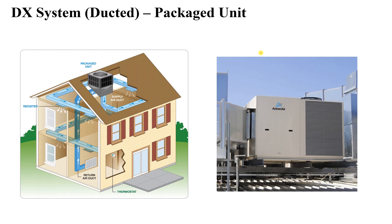There is also a package unit, which contains all components together in one block. It is usually placed on the rooftop and supplies cold air through the duct system. A return air duct absorbs warm air from the building and brings it back to the evaporator, which exchanges heat and provides cold air. These are all the different types of DX systems, all operating on the same principle of compressing and expanding a refrigerant.